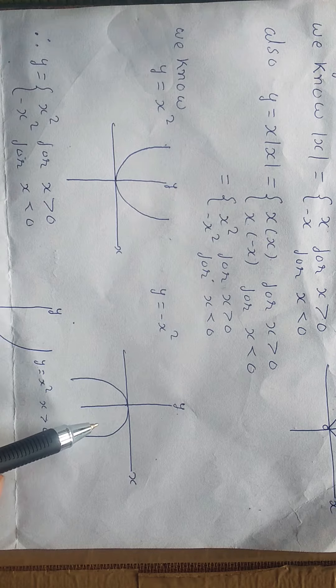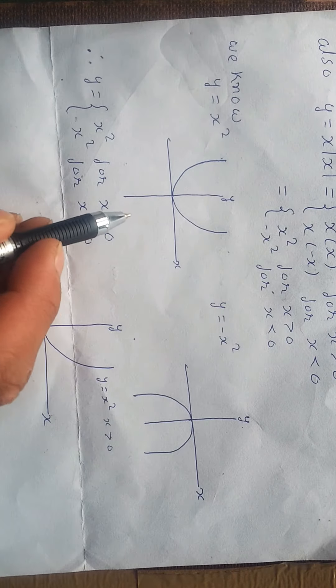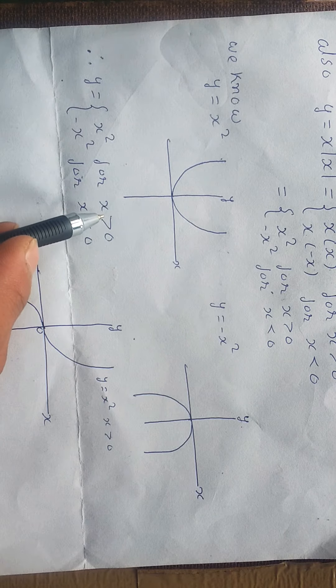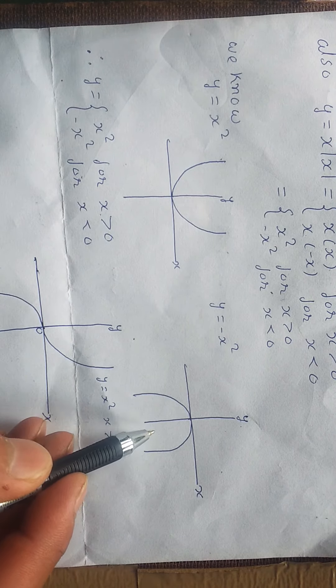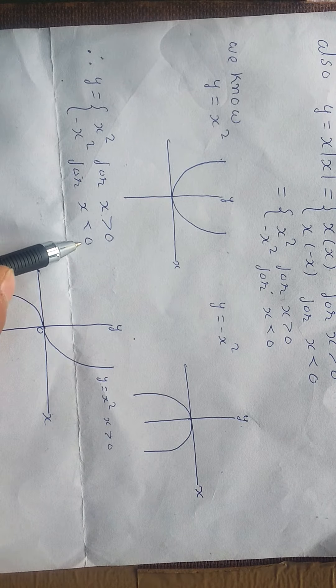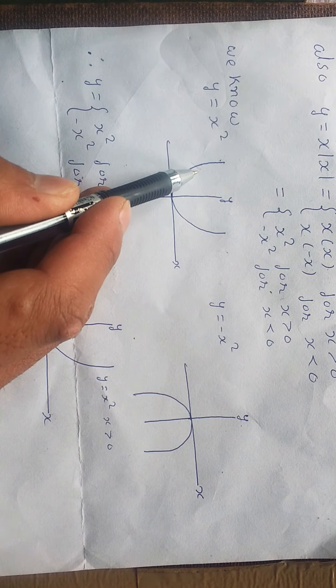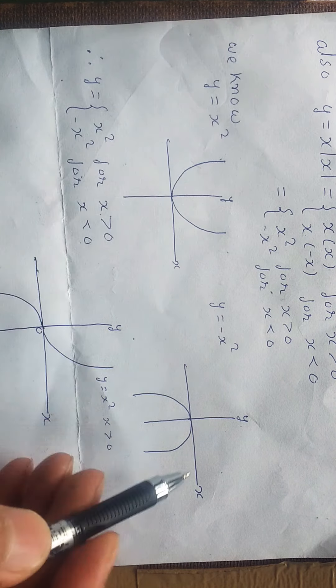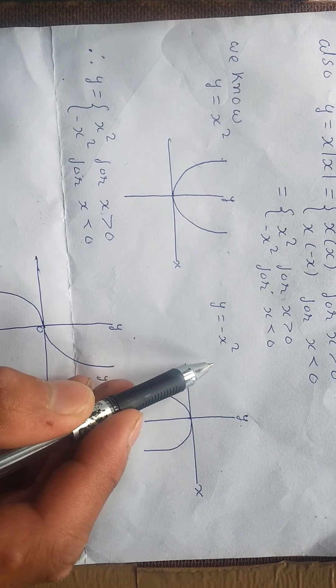Now for the upward parabola we only need the values for x greater than 0, and for the downward parabola we only need the values for x less than 0. So we will neglect the x less than 0 part for x squared and the x greater than 0 part for minus x squared.